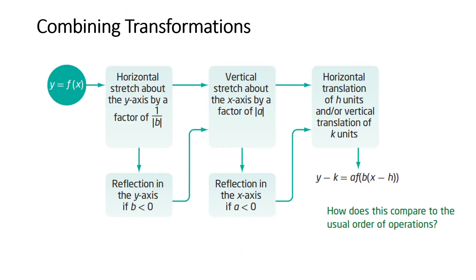In summary, combining transformations is a step-by-step process. If you want to transform f(x) to our standard form, you first do the horizontal stretch by a factor of 1/b, then the vertical stretch by a factor of a, and then do the translation.